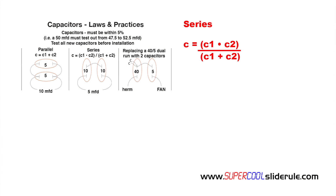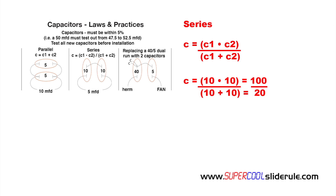So on the top, we will multiply 10 by 10, which gives us 100. Next, we divide this by 10 plus 10, which is 20. So 100 divided by 20 is 5.